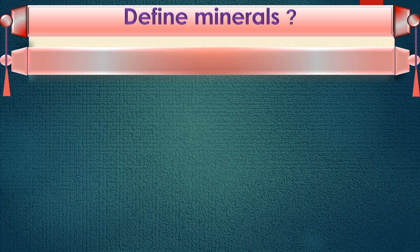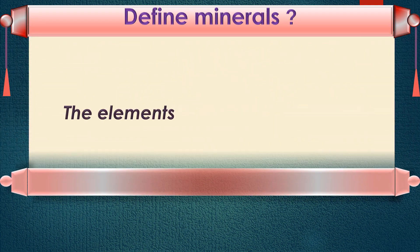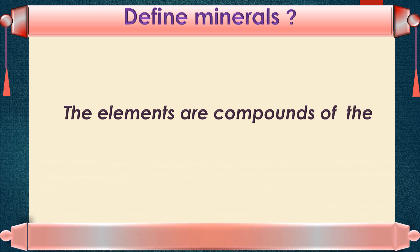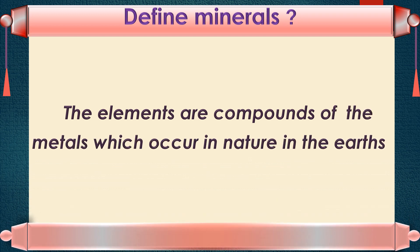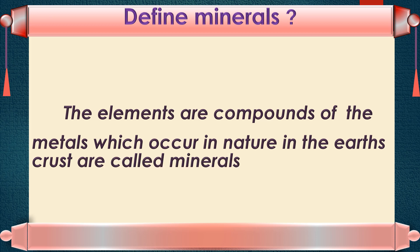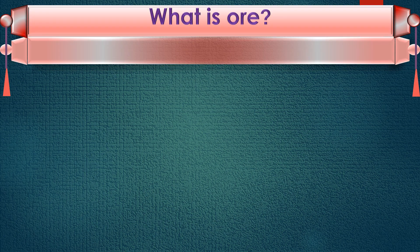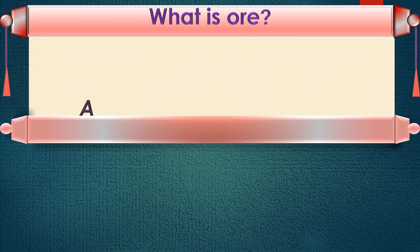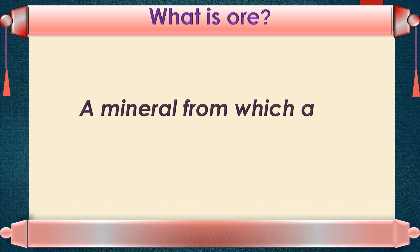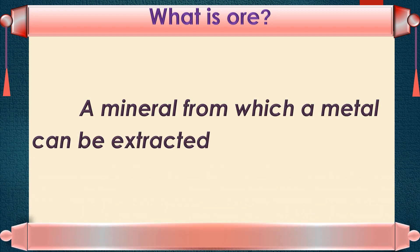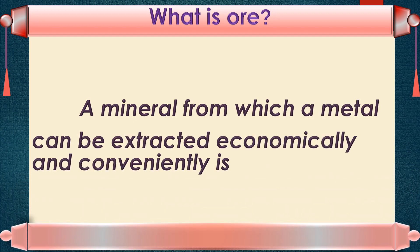Define minerals. The elements or compounds of metals which occur in nature in the earth's crust are called minerals. What is ore? A mineral from which a metal can be extracted economically and conveniently is called ore.